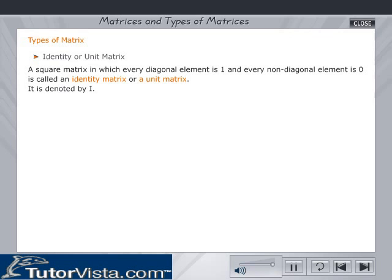Identity matrix: A square matrix in which every diagonal element is 1 and every non-diagonal element is 0 is called an identity matrix or a unit matrix. It is denoted by I.